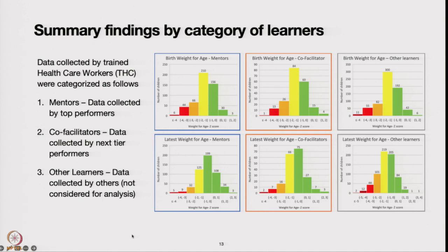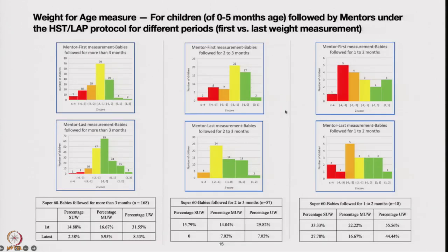Here is data collected by trained healthcare workers — birth weight of babies and numbers of mothers adopted by mentors. Here is weight-for-age for children zero to five months of age. These were babies adopted as newborns and followed by mentors, all of whom followed the LAP — Learning Action Protocol.